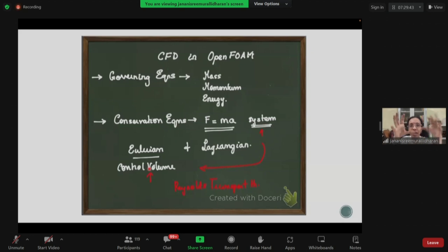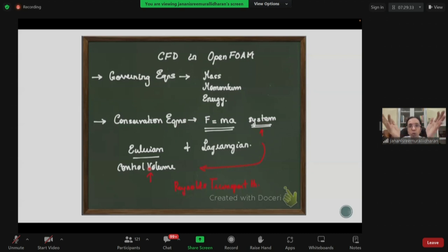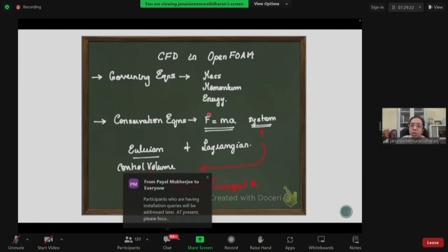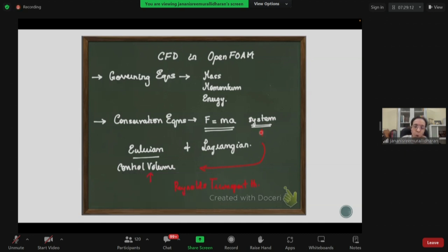Now I'm standing here and looking at fluid come in and go out. How do I write F = MA for this? Because it's just a viewing window and something is going past. So F = MA for what? I need to be able to convert this systemic F = MA to a control volume perspective, which is typically done by something called the Reynolds transport theorem.